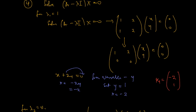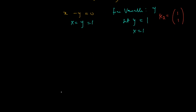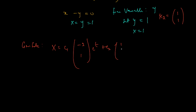So the general solution is x = C1·[-2, 1]·e^t + C2·[1, 1]·e^(4t). And that completes the problem.